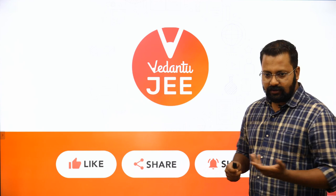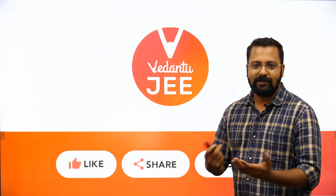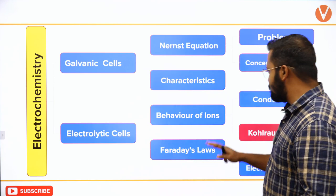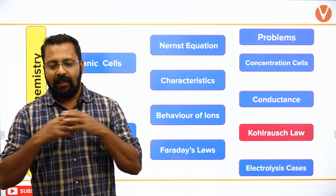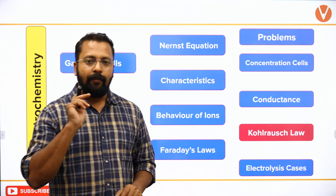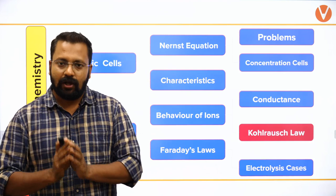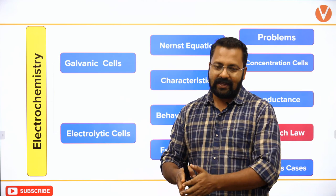Why did the physics class not happen? Physics sir is not well, so the physics class could not happen — he will be here as soon as he is back on track. So in electrochemistry, what we have done until now is the behavior of ions and conductance. In this class we will be discussing Kohlrausch's law, and that would end the whole session. The last session will be Wednesday on Kohlrausch's law and a few problems on conductance, and on Friday it will be a combined problem-solving session on galvanic cells and electrolytic cells — a combined quiz session.